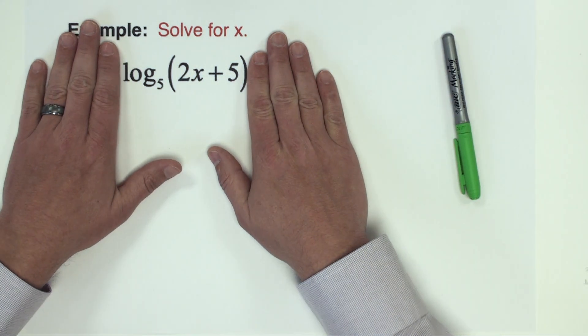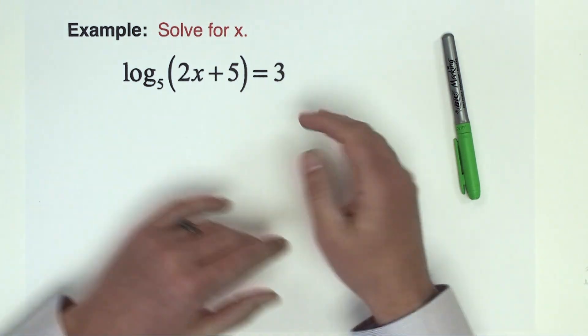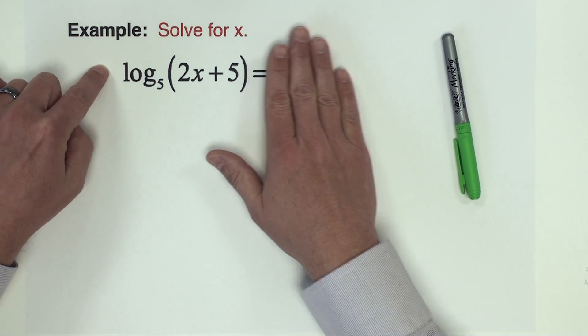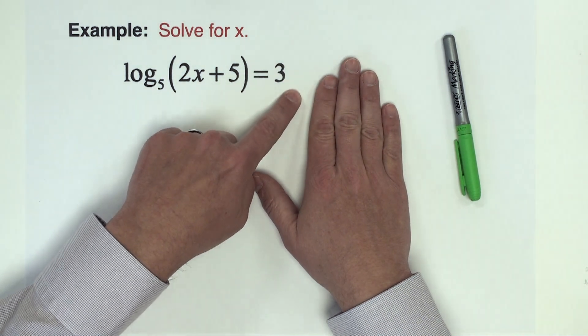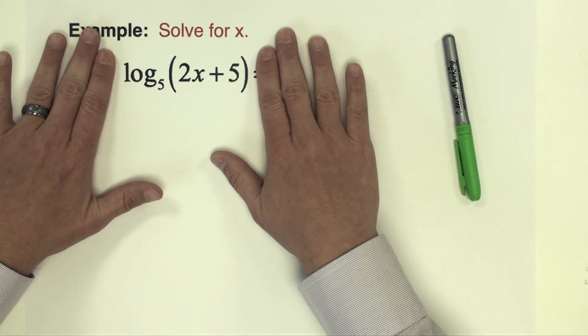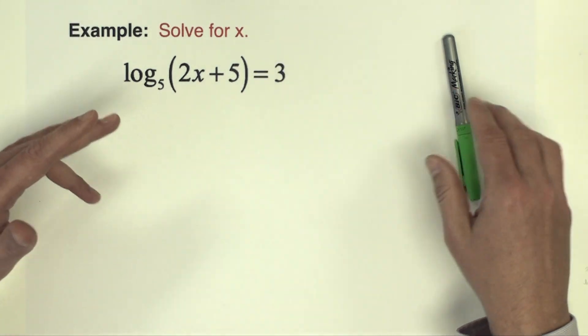If there was something behind the parentheses added or subtracted I'd want to move it over to the right side. If there was a number multiplied here I'd want to divide it over to this side first. But I didn't give you anything like that in this problem. We have this logarithm already completely by itself isolated so we're ready to jump right into this problem and get started.